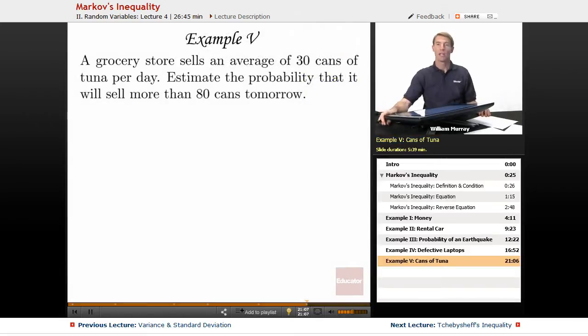Next example here, in our final example, we've got a grocery store that's selling an average of 30 cans of tuna per day. We want to estimate the probability that it will sell more than 80 cans tomorrow.